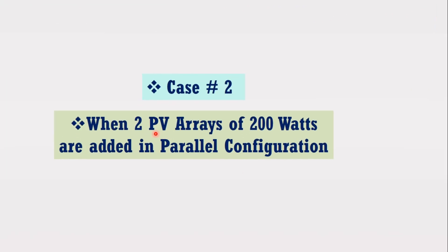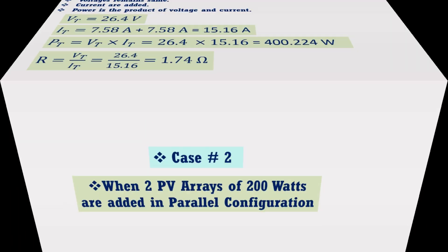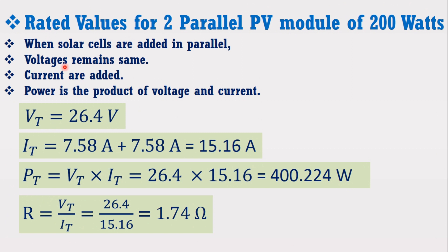Now let us consider another case in which two solar PV arrays are added in parallel. In parallel configuration, currents are added whereas voltage remains the same. Therefore, when two solar PV arrays having current of 7.58A are added, their total current will become 15.16A, whereas voltage remains the same at 26.4V. Since power equals voltage times current, two 200W arrays in parallel will provide a total power of 400.224W. This means that whether solar PV arrays are added in series or parallel, the power rating remains the same — only voltage and current change.